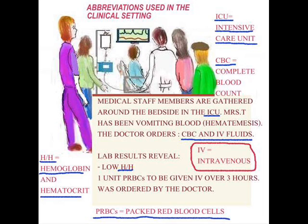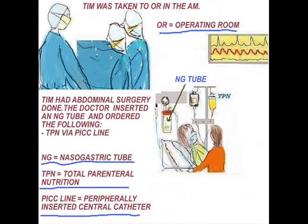We're going to go on to another clinical scenario. Here's Tim. He had abdominal surgery done. Once he's had abdominal surgery, he's not going to be able to eat and drink. So the doctor has put a nasogastric tube down, and the short term is NG for nasogastric. Of course, he was in the operating room — the OR, which we discussed previously — and the doctor ordered TPN, as he's not going to be able to eat and drink.